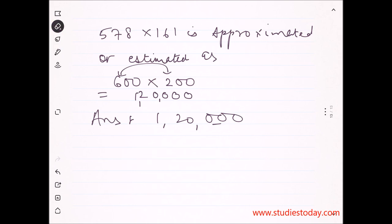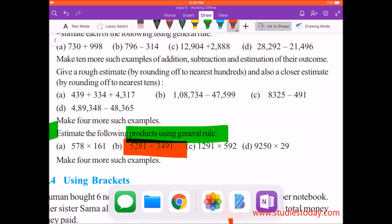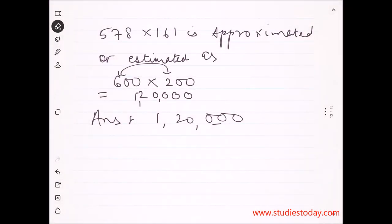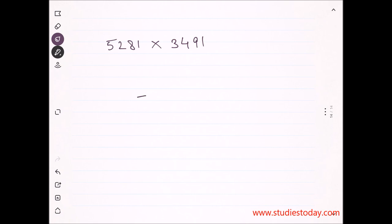Now the next question says 5,281 into 3,491. Here you can easily realize that the maximum place of the number is thousands. Again, we are lucky enough to get the highest place as thousands. So this question will be rounded off to nearest thousands.